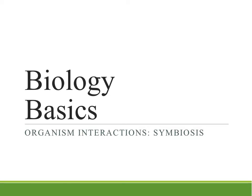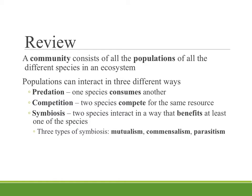In this video, I'm going to talk about symbiosis, which is another category of organism interaction within an ecosystem. Starting with a bit of review: in an ecosystem you will have a community that consists of all the populations of all the different species present. Those populations can interact in three different ways: predation, where one species consumes the other as their energy source; competition, where two species compete for the same resource such as food, water, space, or nesting ground; and symbiosis, where two species interact in a way that benefits at least one of them.